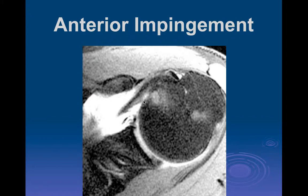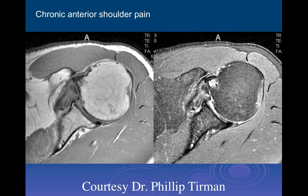You can have marrow edema here due to partial tears of the subscapularis. But if you don't have a partial tear, what you'll find is impaction of the coracoid process against the lesser tuberosity. This marrow edema in this location is probably the most reliable MR sign we have right now for detecting anterior impingement. Here's an example with a narrowed space and edema in the lesser tuberosity right where you would expect it.